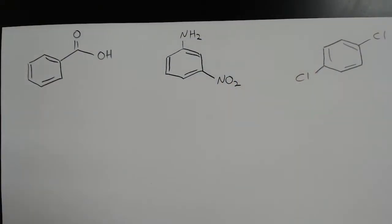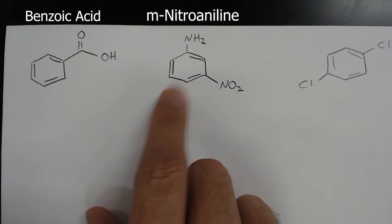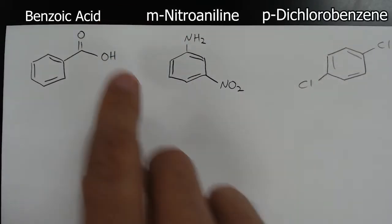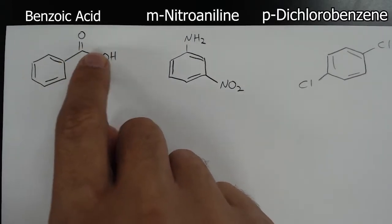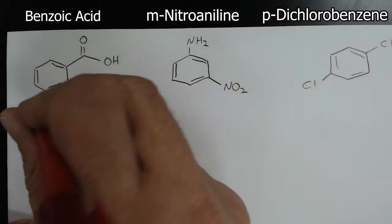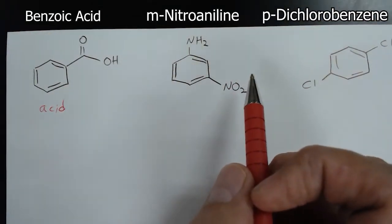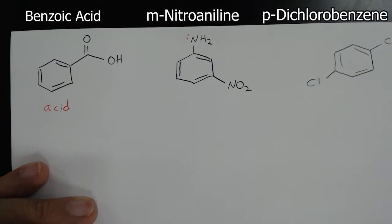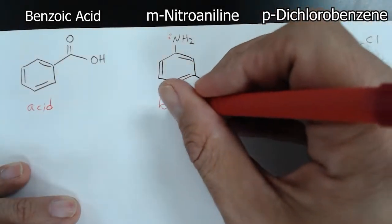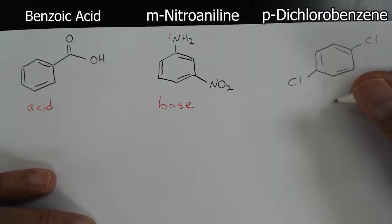Here we can take a look at the three compounds we're going to be separating: benzoic acid, M-nitroaniline, and paradichlorobenzene. We have a carboxylic acid group — this is going to be our acid compound. Then we have the amine, the NH2 group, which has a lone pair — these act as the bases of organic chemistry. And then we have a compound with no carboxylic acid group, no amine — nothing that can really act as an acid or base — so we call this compound neutral.